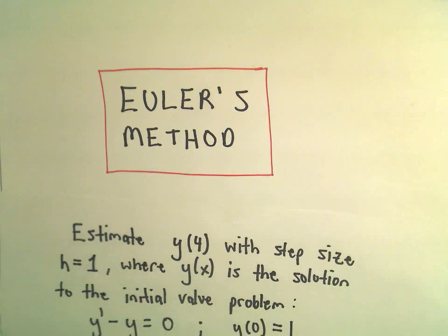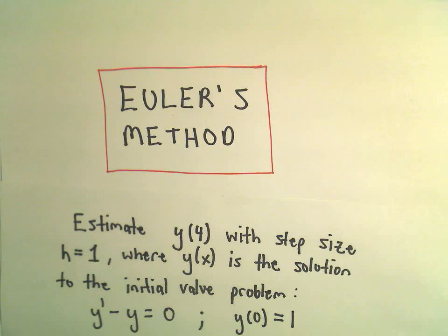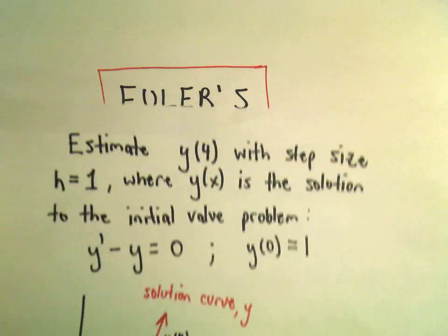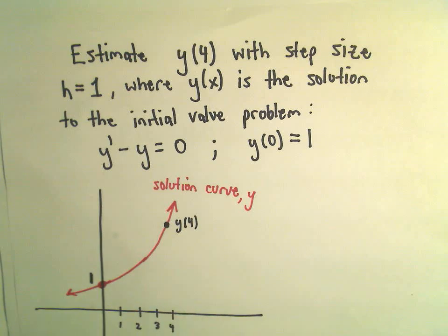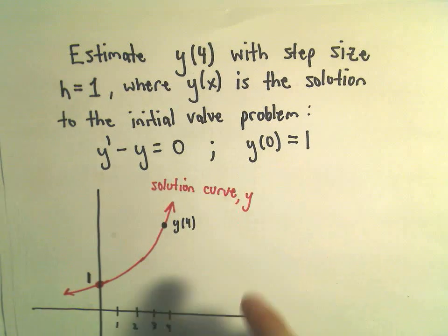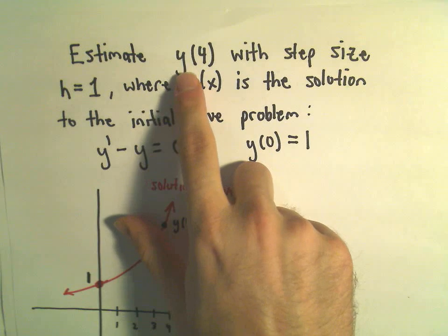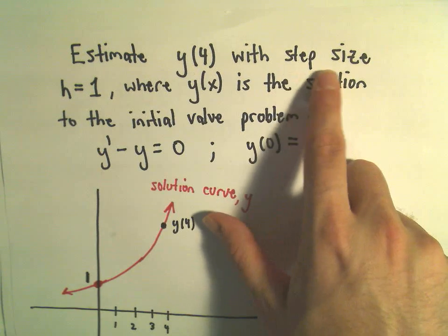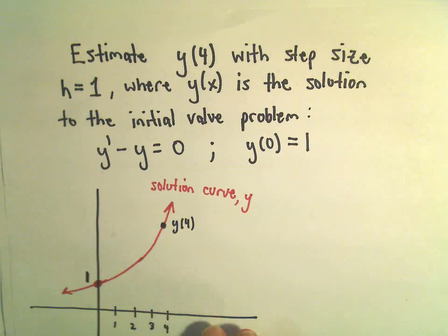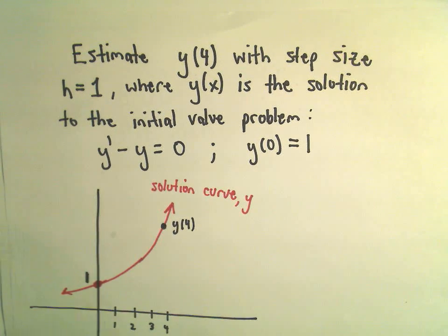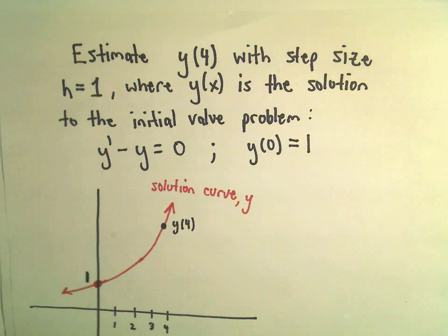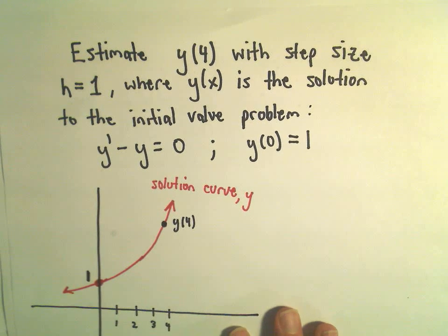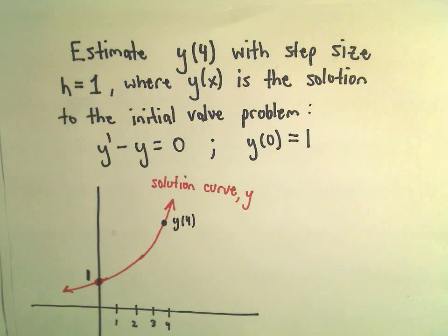The basic idea is that with Euler's method, what we're trying to do is we've got some differential equation and we're trying to estimate some value on our solution curve. We've got some differential equation and some initial condition. Suppose we want to estimate the value y(4) with a step size of 1, where y(x) is the solution to this initial value problem: y' - y = 0 and y(0) = 1.